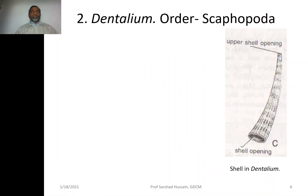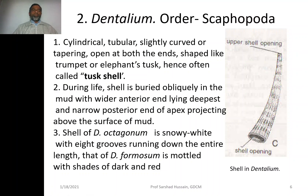Moving to the next organism, Dentalium belongs to the class Scaphopoda. It has a cylindrical tubular shell — hollow from inside and slightly curved, not straight — tapering at one end and broader at the other, with both ends open. It gives the appearance of the tusk of an elephant, so it is also called the tusk shell.